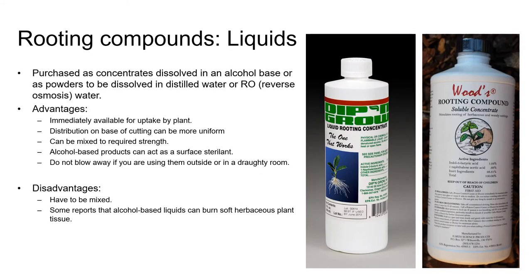Liquid rooting compounds are available as concentrates dissolved in an alcohol base, or as soluble salts dissolved in distilled or reverse osmosis water. The most commonly available alcohol-based liquid is Dip and Grow, and the most widely used water-soluble salts are sold under the brand name Hortus. One of the main advantages of liquid concentrates is that you can mix them to the desired strength — you can't do this very easily with powders and gels. If you work with a variety of plant material needing different strength rooting compounds, liquids may be a better product than powders or gels.